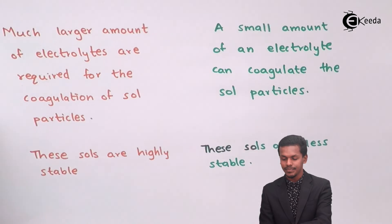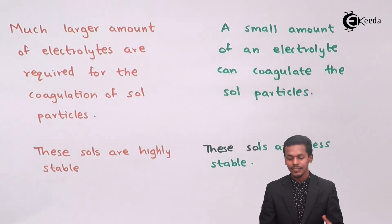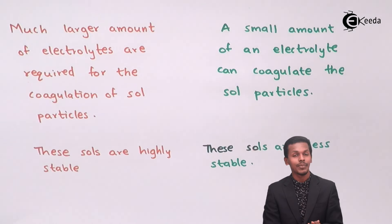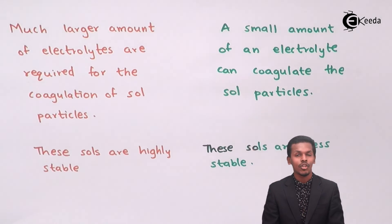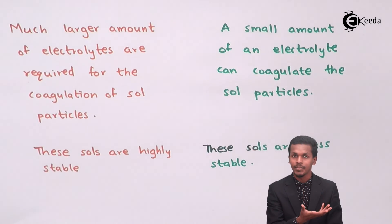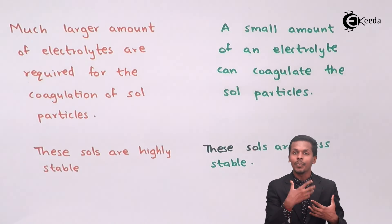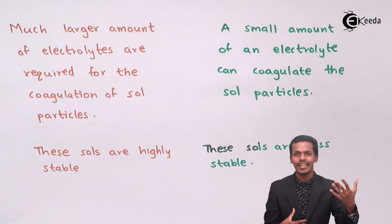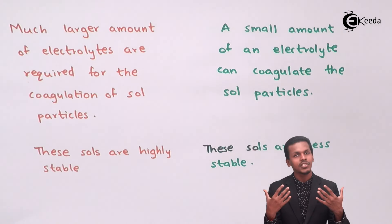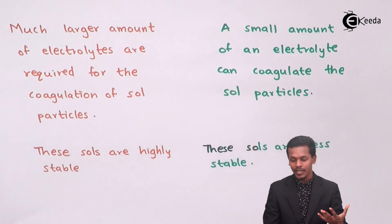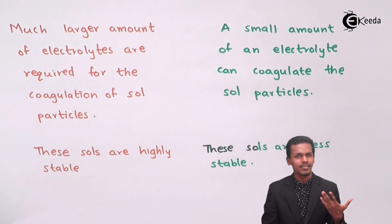Another key difference is coagulation: for lyophilic sols, a much larger amount of electrolytes is required to coagulate the sol particles. Electrolytes are substances that dissociate to form completely positive or negative ions. These charged particles attract opposite-charged particles, causing coagulation. Because of the strong affinity in lyophilic sols, more electrolytes are needed to bring about coagulation. For lyophobic sols, only a small amount of electrolytes is sufficient to coagulate the sol particles.